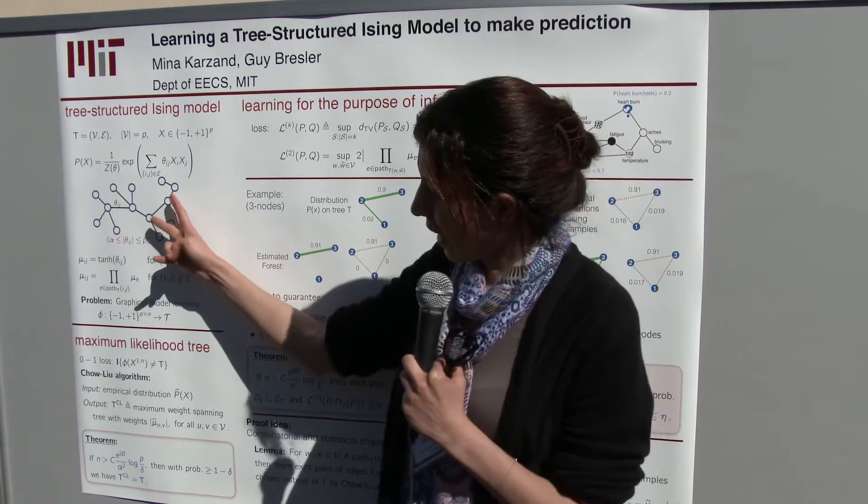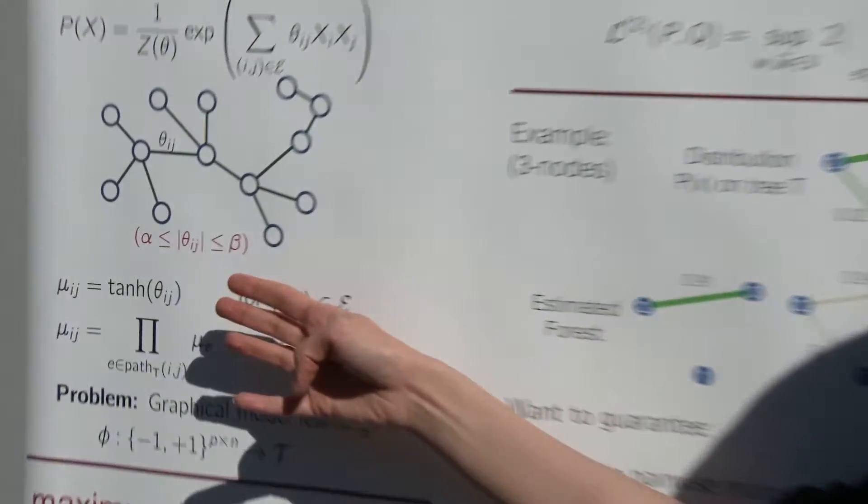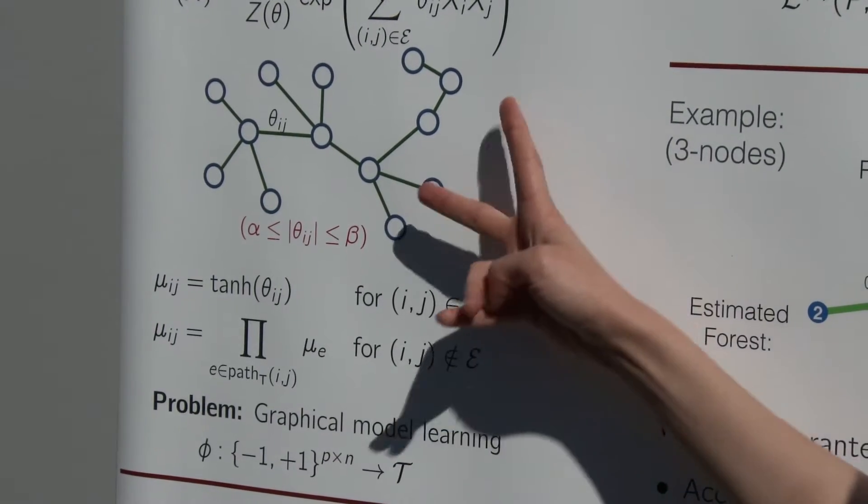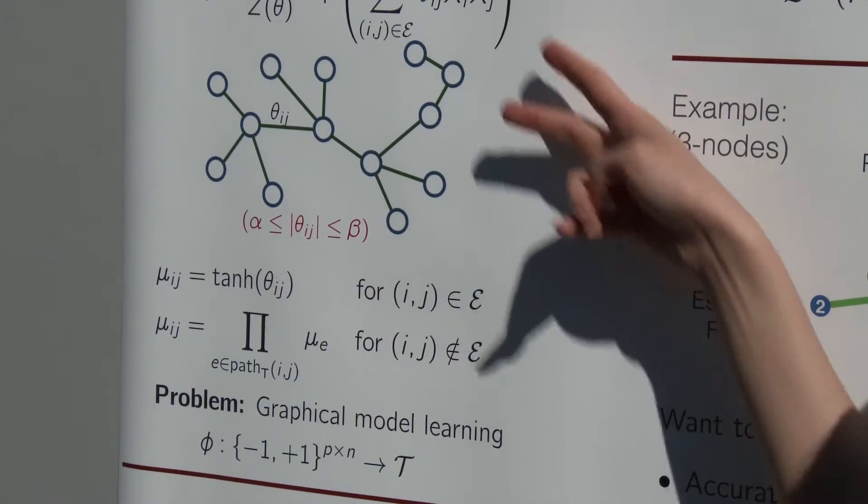Basically, if two random variables are neighbors in this tree, then the correlation between them is tangent theta ij. And if they are not neighbors, then I look at the path between them, and the correlation is the product of correlations in this path.